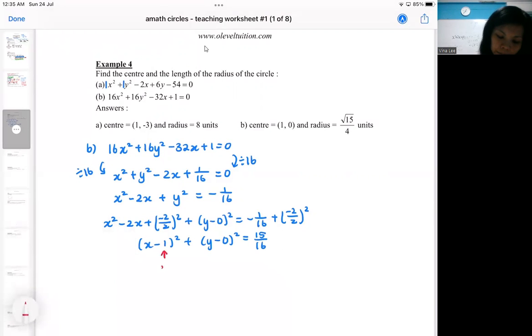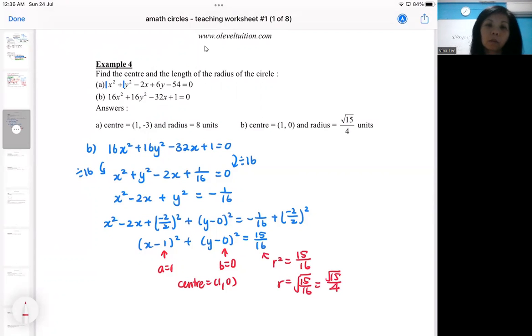So this is your A. This is your B. So the center is 1, 0. This is R square. That's why if you would like the radius, you got to take a square root. So this one will be the very basic that you must know for circles. You must know how do you get center and radius with any given equation. Or else subsequently all the questions can be quite stuck because you can't even get the basic center and radius. So give it a try for A. Will you get the same center and radius.